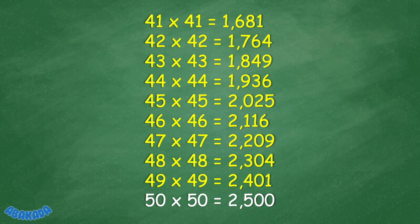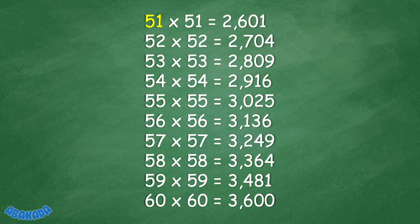50 times 50 equals 2,500. 51 times 51 equals 2,601. 52 times 52 equals 2,704. 54 times 54 equals 2,916. 55 times 55 equals 3,025. 56 times 56 equals 3,136.